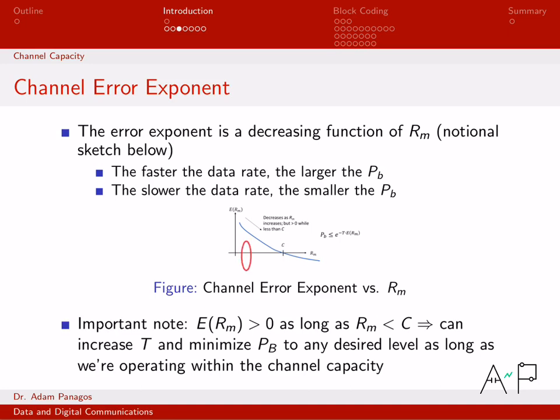Small data rates, transmitting at a small data rate, that's easy. I'm going to have a larger error exponent, which means a smaller bit error rate. And then as I get bigger and bigger, larger data rates are tougher to achieve. My error exponent gets smaller, which says I may need to transmit capital T longer and longer and longer.